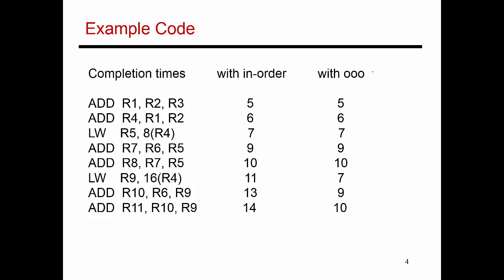Here's an example piece of code — a sequence of about eight instructions. Let's analyze what this code is doing. The first instruction is adding two values, putting it into R1. The second instruction depends on the first, because the value of R1 is fed as an input to the second instruction. That second instruction produces a value in R4, which is used by the third instruction — so there's another dependence. That computes an address and loads something into R5.